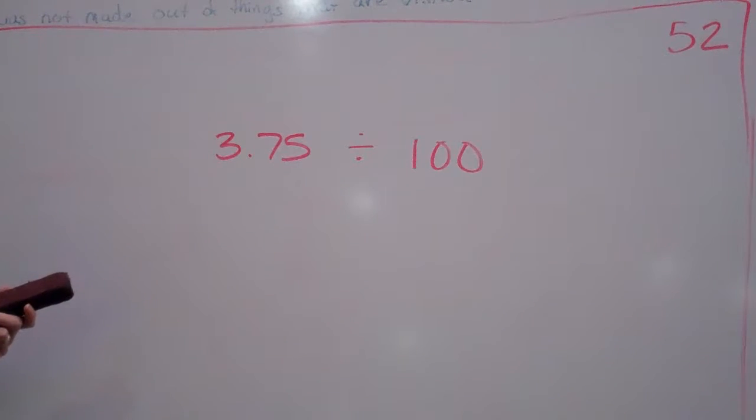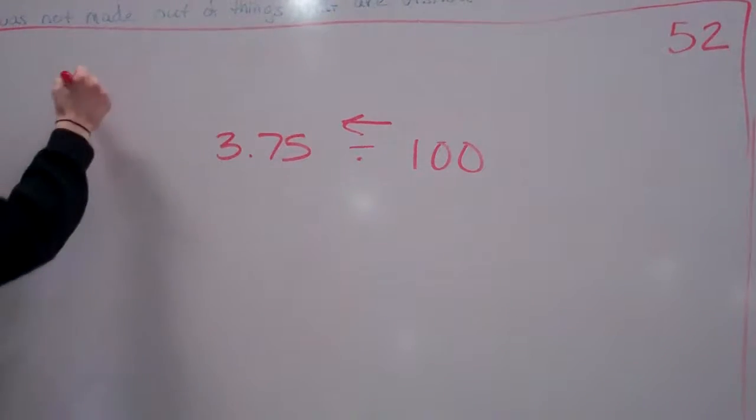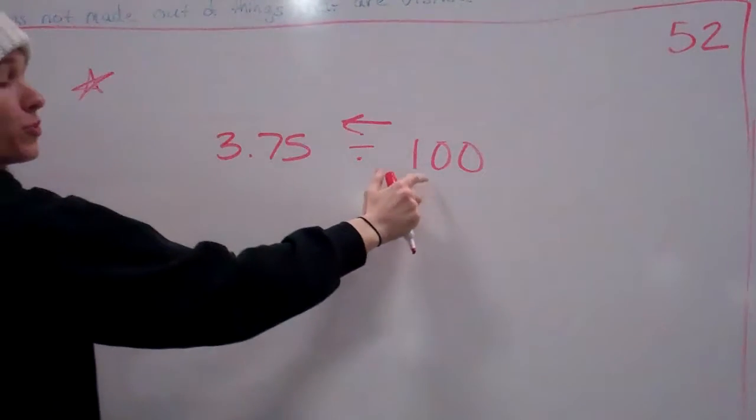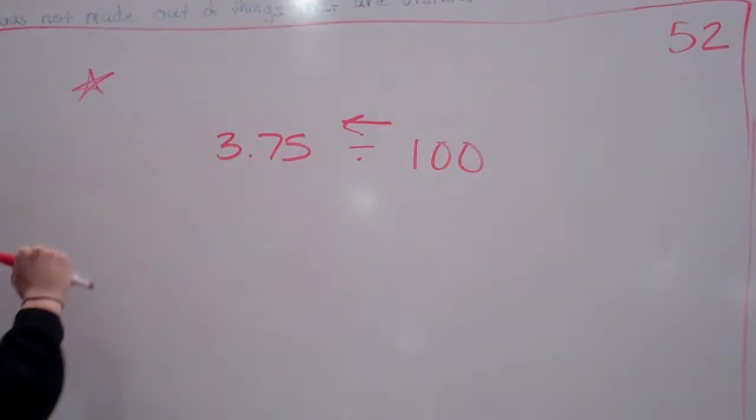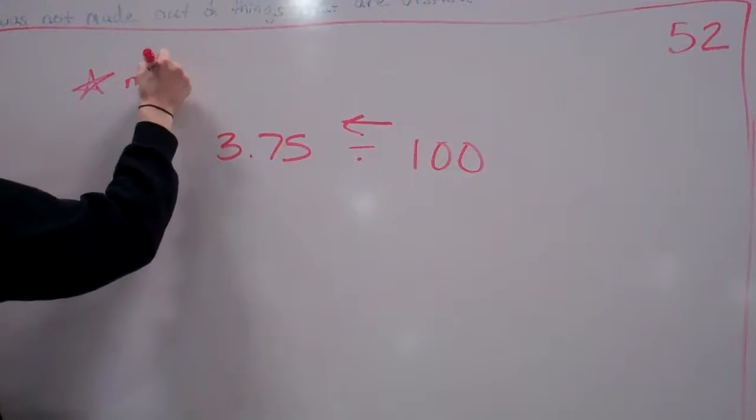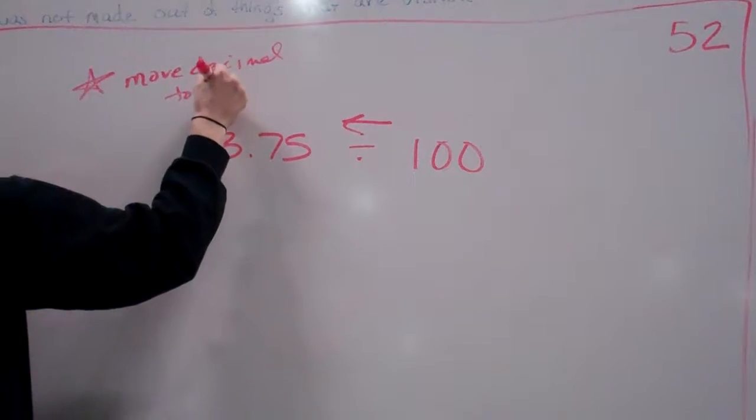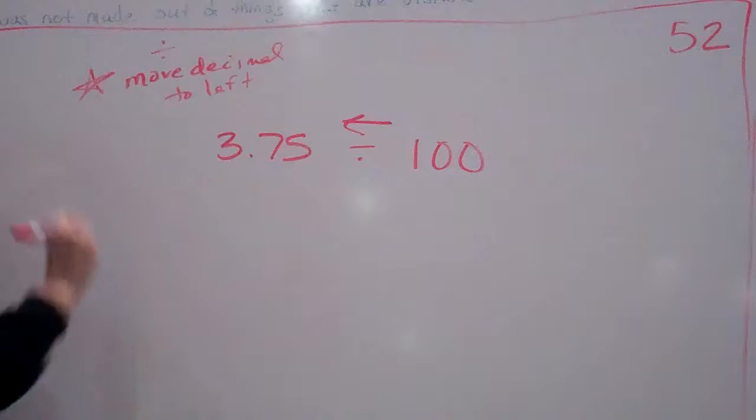But division, which way am I going to go? The opposite way. I'm going to go to the left. So write that down somewhere. When dividing by multiples of 10, 100, 1,000, whatever, you're going to move the decimal to the left when dividing.